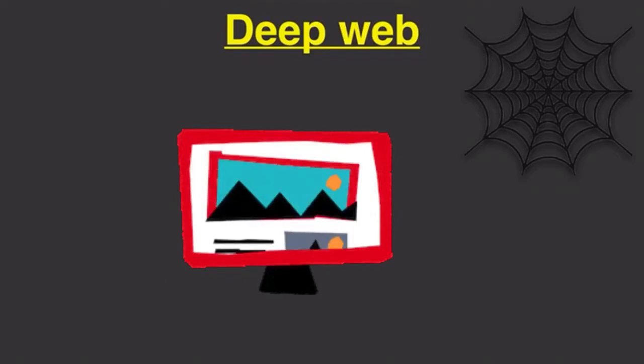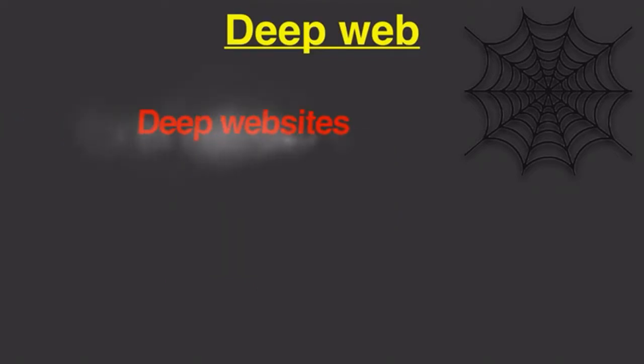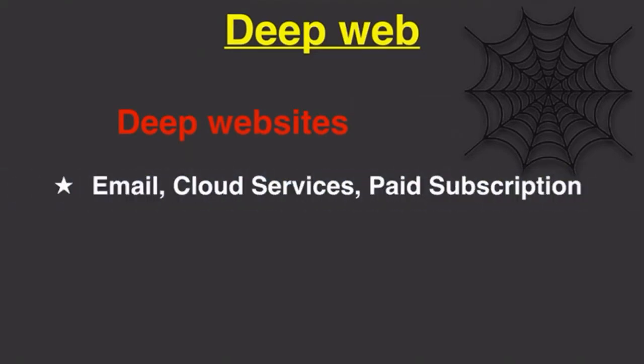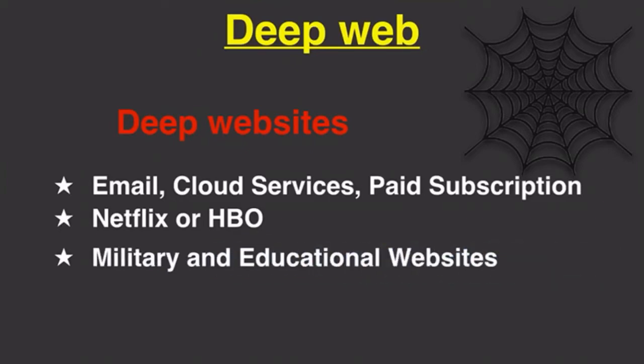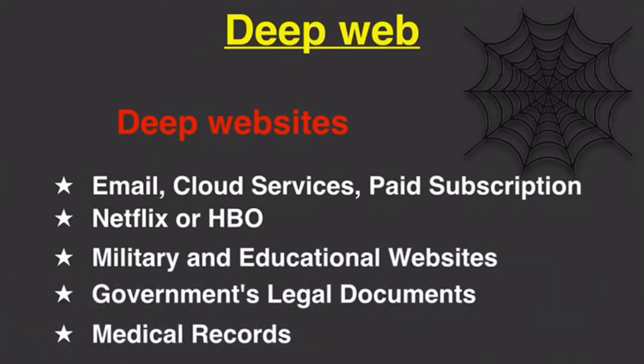Here are some examples of deep web content: websites that can be accessed with a username and password, such as email, cloud services, paid subscription-based platforms, video-on-demand services like Netflix or HBO, military and educational websites, government-related legal documents, and medical records. That's what accessing the deep web is all about.